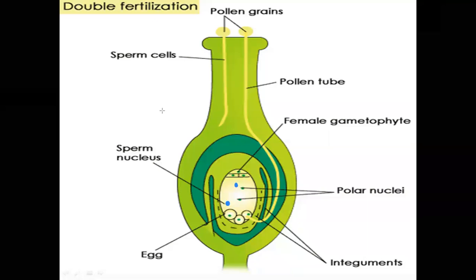As you know, when compatible pollen grains fall on the stigma, they are going to produce the pollen tube like this. Here are the pollen tubes. This pollen tube moves through stylar tissue down into the ovary where the ovary is present.